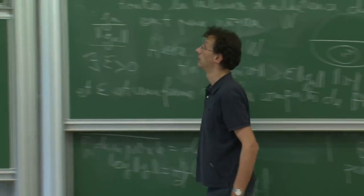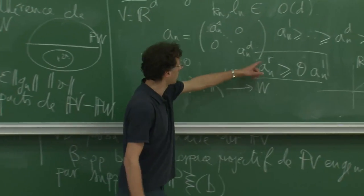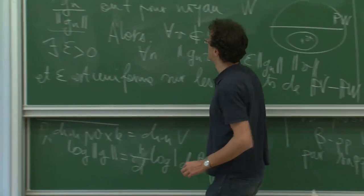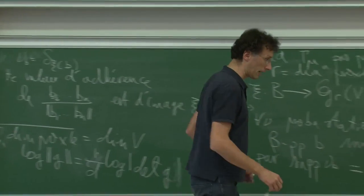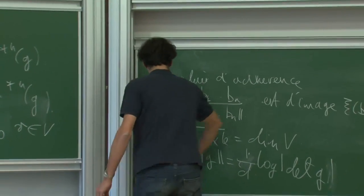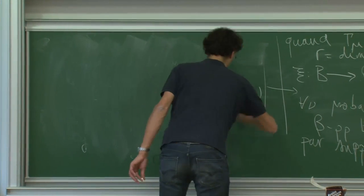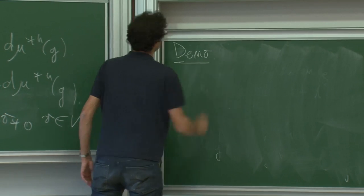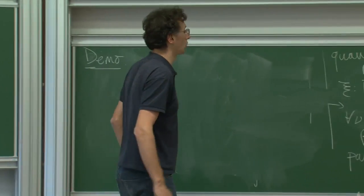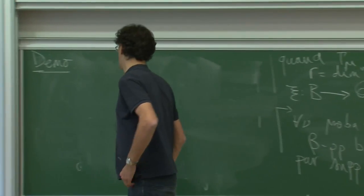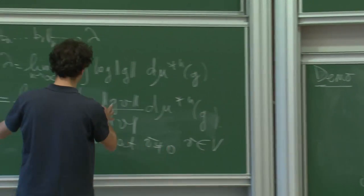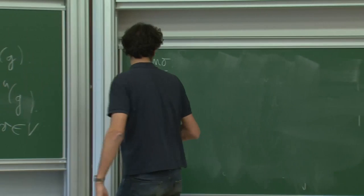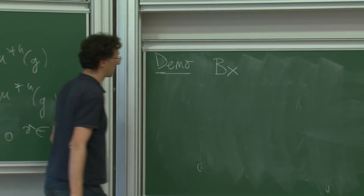Le point clé : on n'a pas besoin de proximalité ici, juste de savoir qu'il y a un exposant R fixé. Voilà comment ça se traduit pour démontrer le théorème de Furstenberg-Kesten. Je vais faire un peu de théorie ergodique. Je considère B l'espace de Bernoulli, je fais le produit avec l'espace projectif PV, et je définis une transformation associée à la chaîne de Markov sur PV induite par mu.